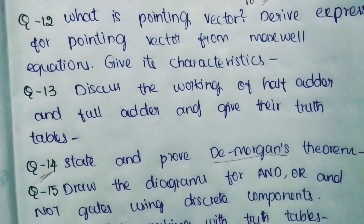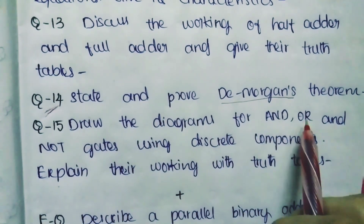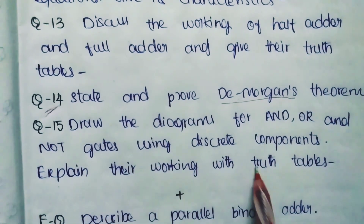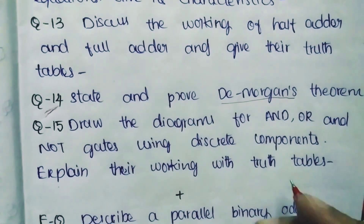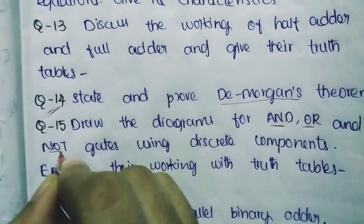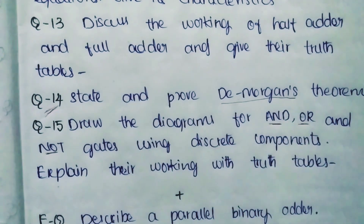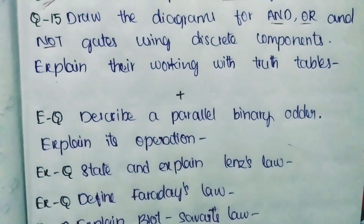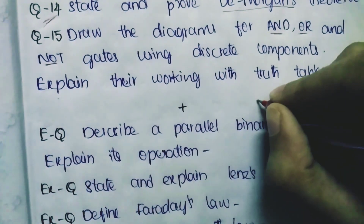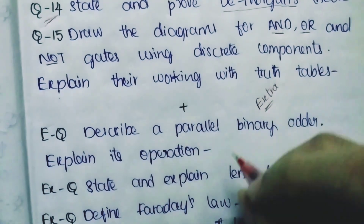Question Number 15: Draw the diagrams for AND, OR and NOT gates using discrete components and explain their working with the truth tables. In the syllabus, some places use 'AND, OR, NOT' and other places use different words. Check your syllabus carefully. After these 15 questions, extra questions are also being provided - 7 extra questions.